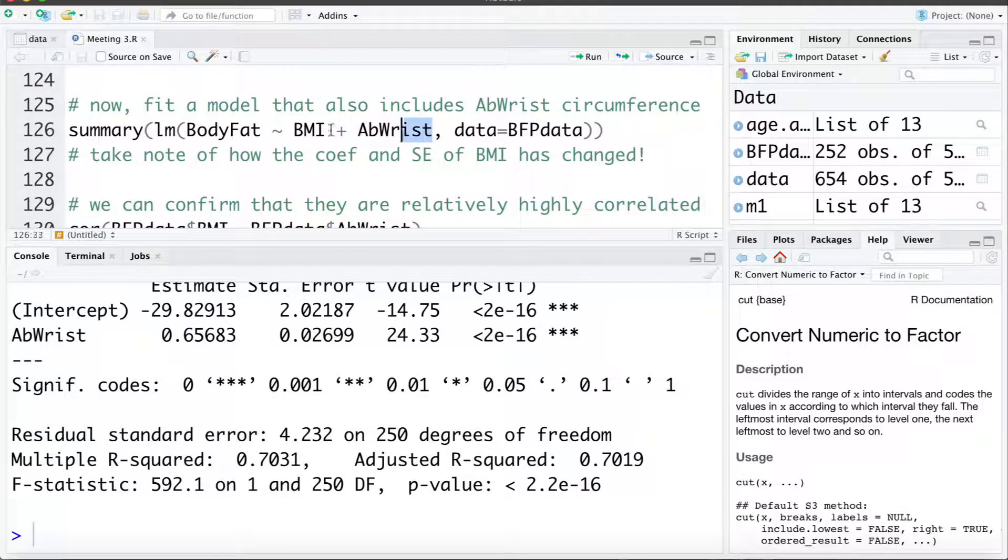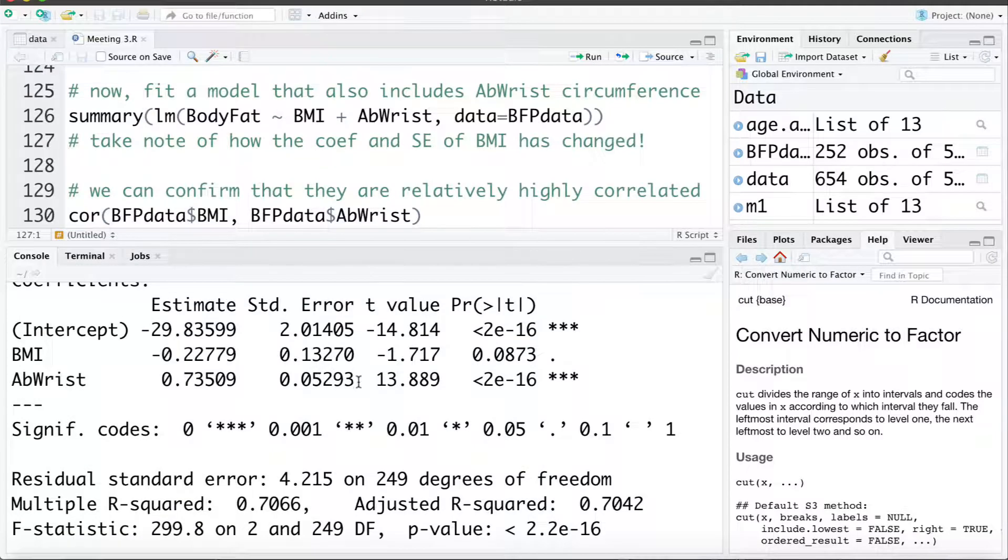Now I'm going to fit a model that includes both BMI and abris, so these two variables that conceptually we said may be collinear or highly associated. Let's fit that model and ask for a summary of it. The first thing to note is the inflation of the standard errors. Remember the standard error for abris when it was just in the model on its own was 0.03. It's now 0.05. It's almost doubled. The standard error for the BMI coefficient when it was in the model on its own was 0.08. Now it's gone up to 0.13. It's increased by 50% or more. So that's one way that we can identify collinearity numerically as we see these standard errors getting inflated.